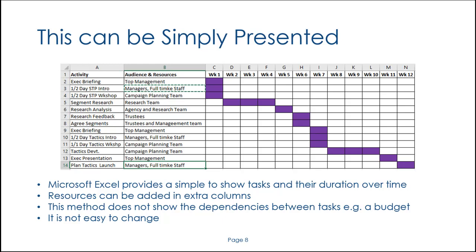Using an Excel spreadsheet you can set up a very simple task list like this to help you control your project, adding in columns for extra resources as required. The only thing it doesn't allow you to do is identify dependencies between different tasks. I would recommend this approach if you're a smaller charity or on a limited budget — you can get started using a simple project plan built in Microsoft Excel.